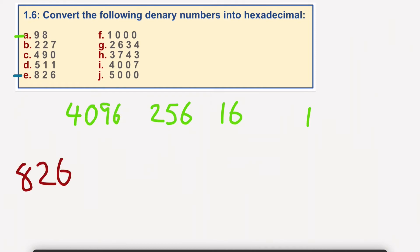826. Well, how many 256s go into 826? So 3 times 256 would be 768. So we'll put a 3 in there. And that's 768. Well, let's take that away from that. 826 take away 768. That would give us a total of 58.